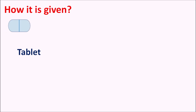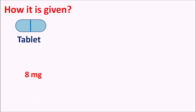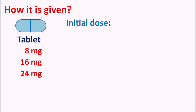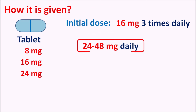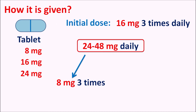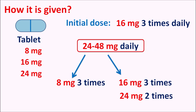How is it given? This drug is available as tablets in three strengths: 8 mg, 16 mg, and 24 mg. The initial dose is 16 mg given three times daily, so the total dose per day is 48 mg. The maintenance dose is variable from 24 to 48 mg per day given as divided doses. For instance, 24 mg can be given as 8 mg three times daily, and 48 mg can be given as 16 mg three times daily. Alternatively, it can be given as 24 mg twice daily.